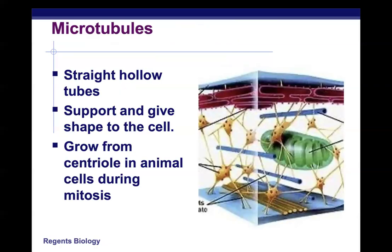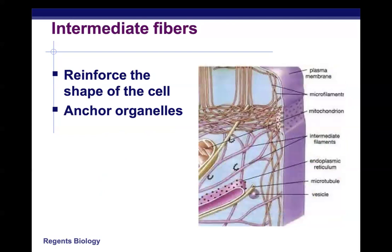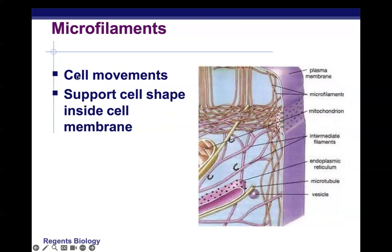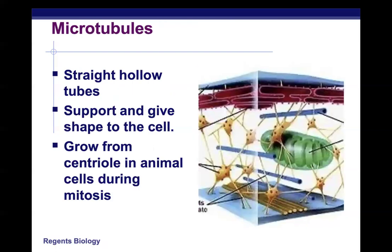Microtubules are hollow tubes that support and give shape to the cell; they grow from structures called centrioles in animal cells during mitosis. Intermediate fibers are slightly larger and reinforce the shape of the cell and anchor organelles in place. Microfilaments are the smallest and aid in cell movement while supporting the cell shape inside the cell membrane.